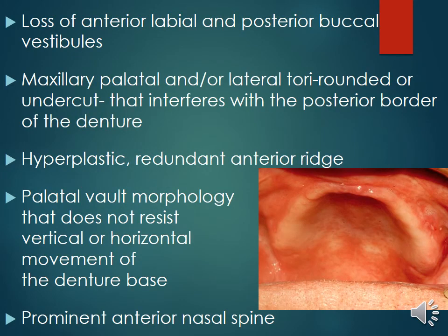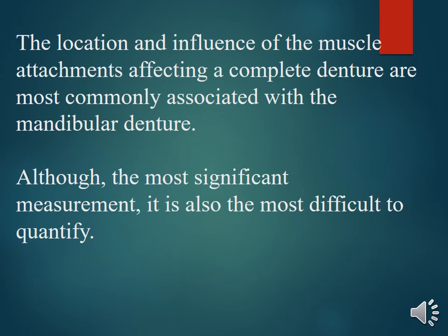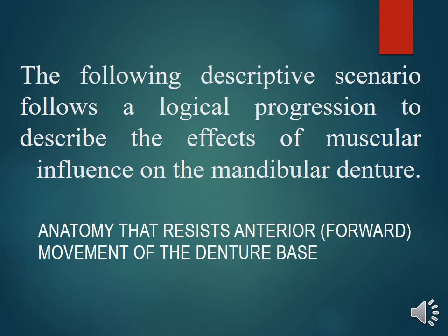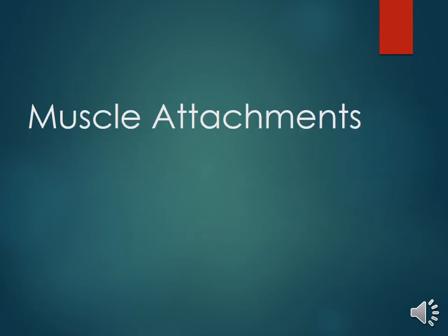In type D, there is loss of both anterior labial and posterior buccal vestibule; maxillary palatal and/or lateral tori that are rounded or undercut, interfering with the posterior border of the denture; hyperplastic redundant anterior ridge; and palatal morphology that does not resist vertical or horizontal movement of the denture base, along with a prominent anterior nasal spine. The location and influence of muscle attachments affecting a complete denture are most commonly associated with the mandibular denture, and are the most significant yet most difficult measurements to quantify.